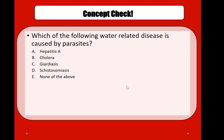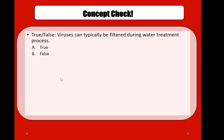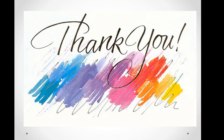Which of the following water-related diseases is caused by a parasite? The answer is D — schistosomiasis. And finally: can viruses typically be filtered during the water treatment process? False — that's all.